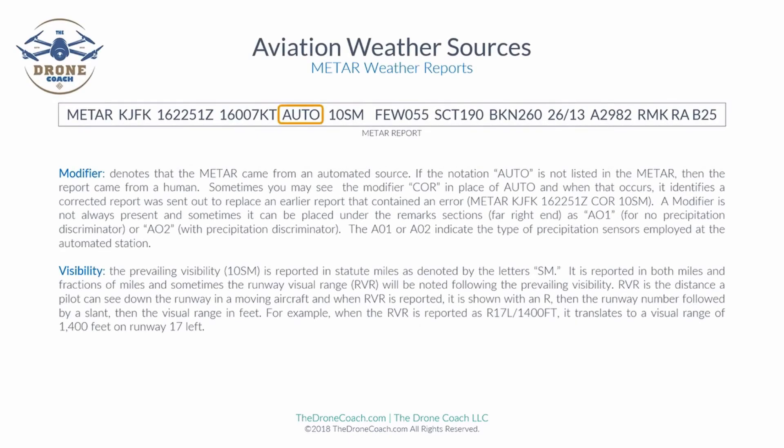Next we have what is called the modifier. The modifier denotes that the METAR report came from an automated source. If the notation AUTO is not listed, the report came from a human. Sometimes you may see the modifier COR in place of AUTO, which identifies that the report was corrected and sent to replace an earlier report that may have contained an error.